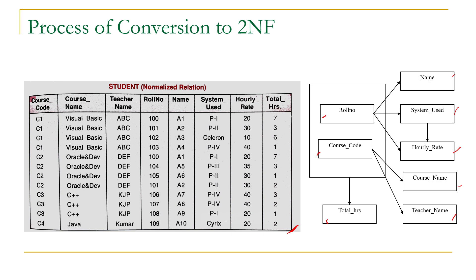We have six non-key attributes: name, system used, hourly rate, course name, teacher name, and total R. The definition states that every non-key attribute should be fully functional dependent on the primary key — functionally dependent on the combination but not on any subset. Name is functionally dependent on the primary key, but it is also dependent on a subset of the primary key, roll number. So name is not fully functional dependent because it depends on a subset.